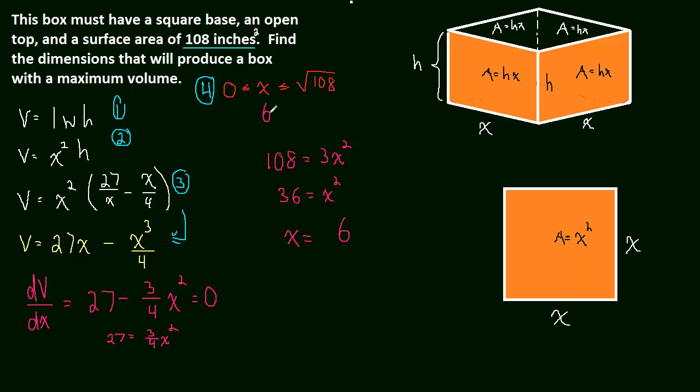So now we have to test 0, 6, and the square root of 108 and see which one is the biggest. Those are the only possible spots that we could have a maximum—at the endpoints or when x is equal to 6 at that critical number. It's important to test these things because it could be the volume could look something like this, and then this critical number would still show up, but it's a minimum in this case.